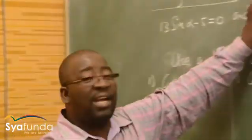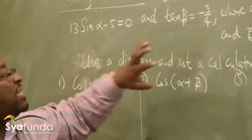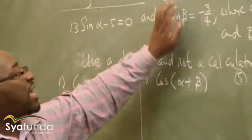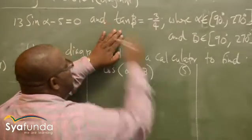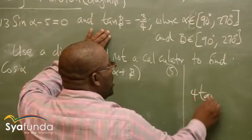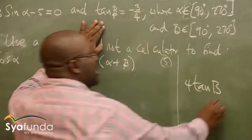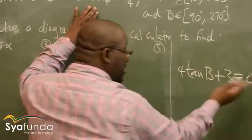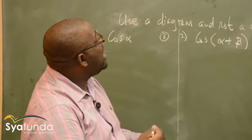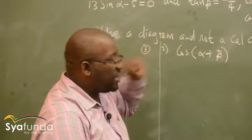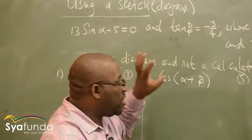In this case, tan beta is equal to something over something. There's nothing stopping the examiner from saying, taking 4 this side and saying 4 tan beta, and taking 3 this side and saying plus 3 is equal to 0. There's nothing stopping the examiner from putting it in this form. So it is up to me, as a learner, to put it in the form: something is equal to something over something.